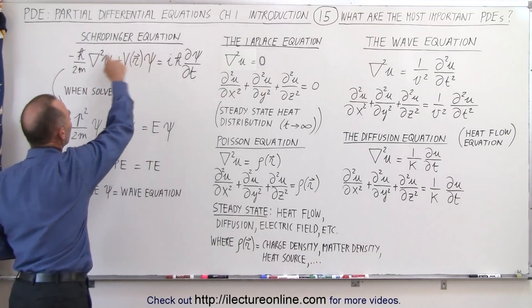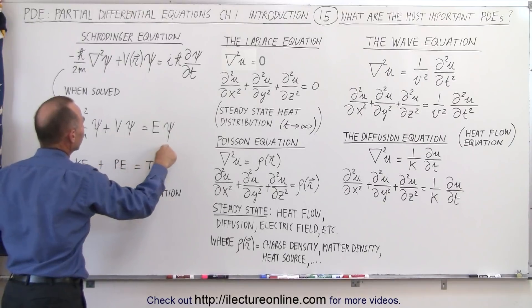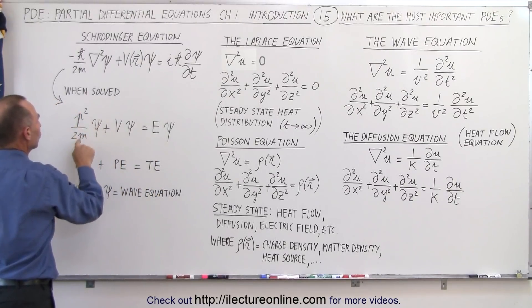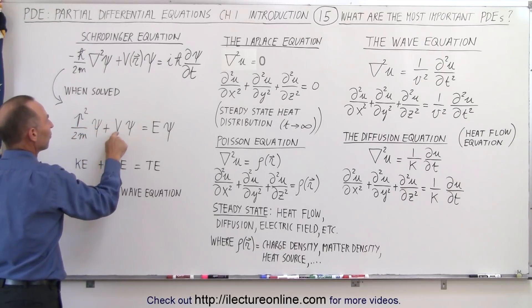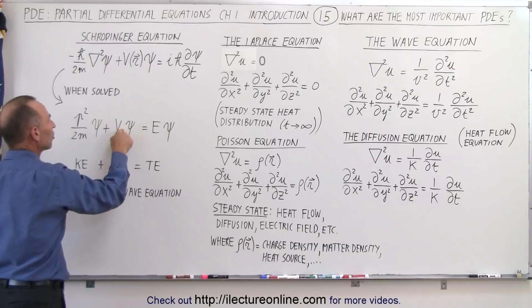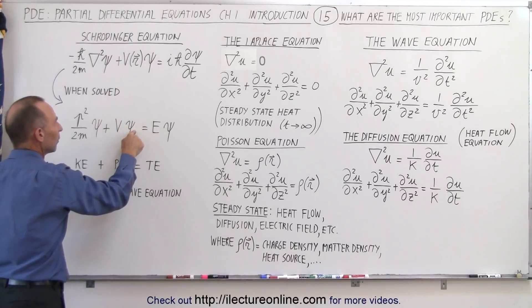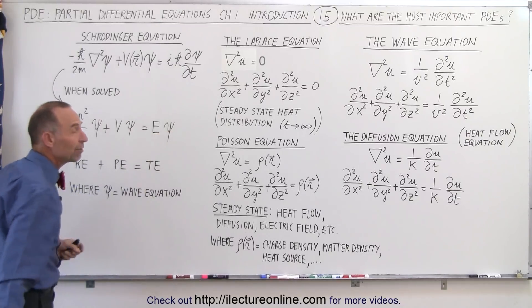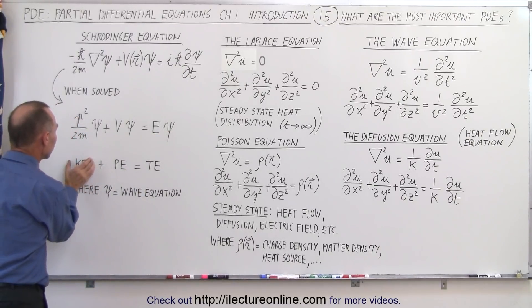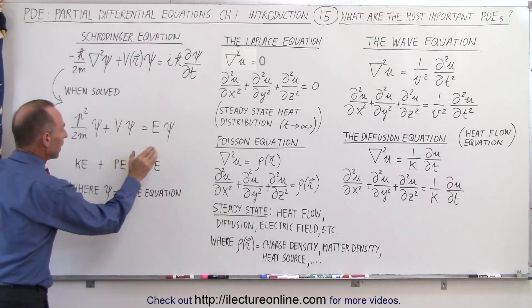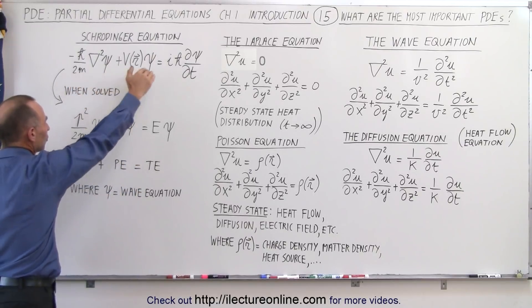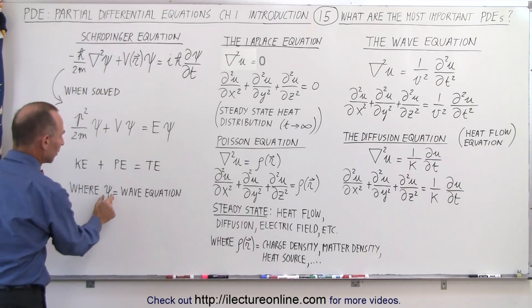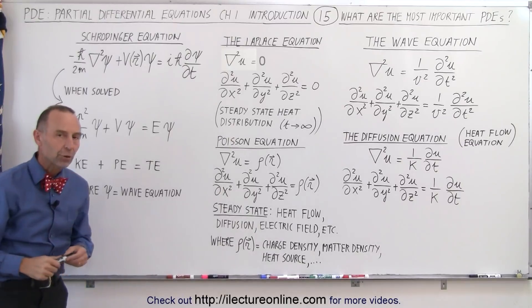If we solve the Schrödinger equation, we end up with something that looks like this. We can see here we have p squared over 2m, p being the momentum, multiplied times the wave function, plus v, which represents the potential energy or the potential, multiplied times the wave function, and e represents the total energy multiplied by the wave function. So essentially we have the kinetic energy term, the potential energy term, and the total energy term. And that's then the solution format of the Schrödinger equation when we solve it, this being the symbol for the wave equation.